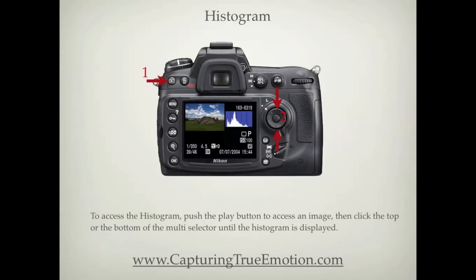To access the histogram, push the play button to access an image, then click the top or the bottom of the multi-selector until the histogram is displayed.